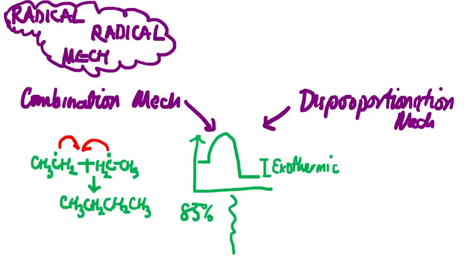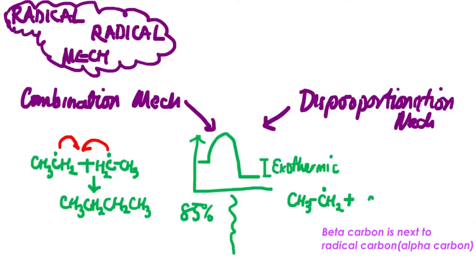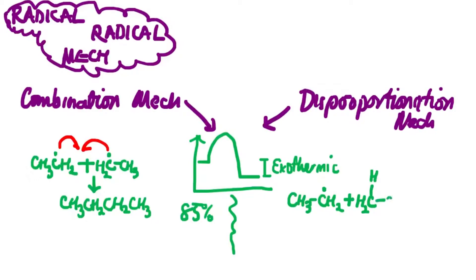Looking at the competitive reaction, the disproportionation mechanism, the same thing happens but one radical turns so that instead of presenting its alpha carbon, it presents its beta carbon. The beta carbon has a hydrogen exposed, and the neighboring radical presents its electron to that sigma bond, resulting in the breaking of the sigma bond and the formation of a pi bond.